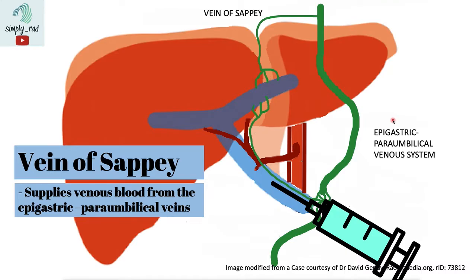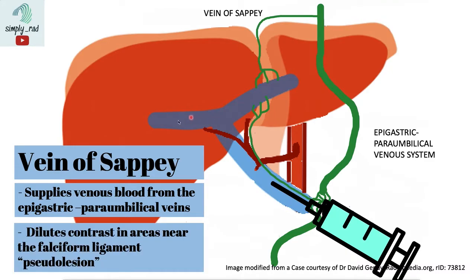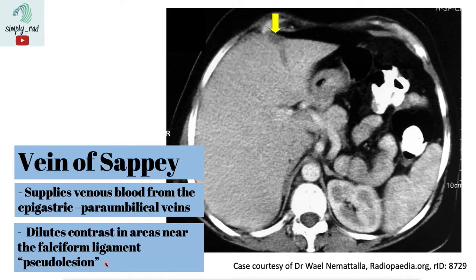During the portal venous phase, where there is maximal enhancement of the liver via contrast within the blood flowing in the portal vein, areas supplied by the vein of Sappey will have extra blood without contrast. This creates a dilution of contrast in areas near the falciform ligament, creating a pseudolesion — areas of hypo-enhancement in that typical area.